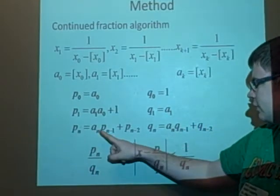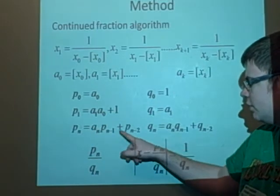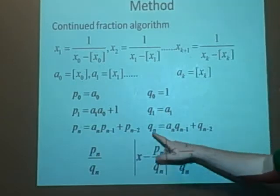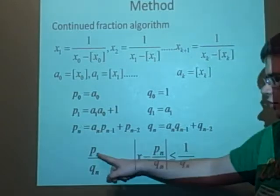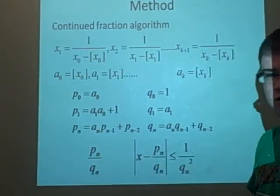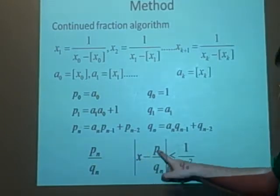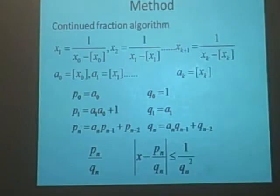And pn is an times pn minus 1 plus pn minus 2, that's what I needed to give you these two, and the qn is just the same really, but with q's. And if we put them in the form pn over qn, this will give you an approximation. And this does give quite a close approximation, as the n gets bigger, it will give you an error of less than 1 over qn squared.